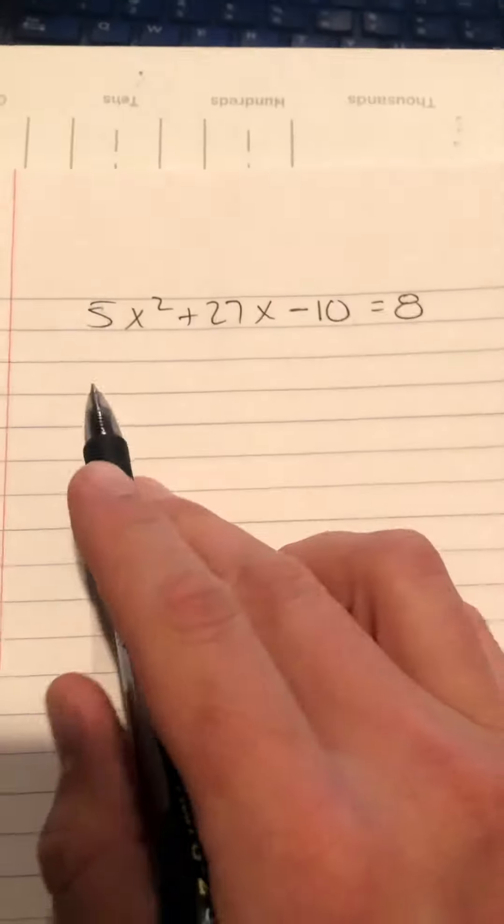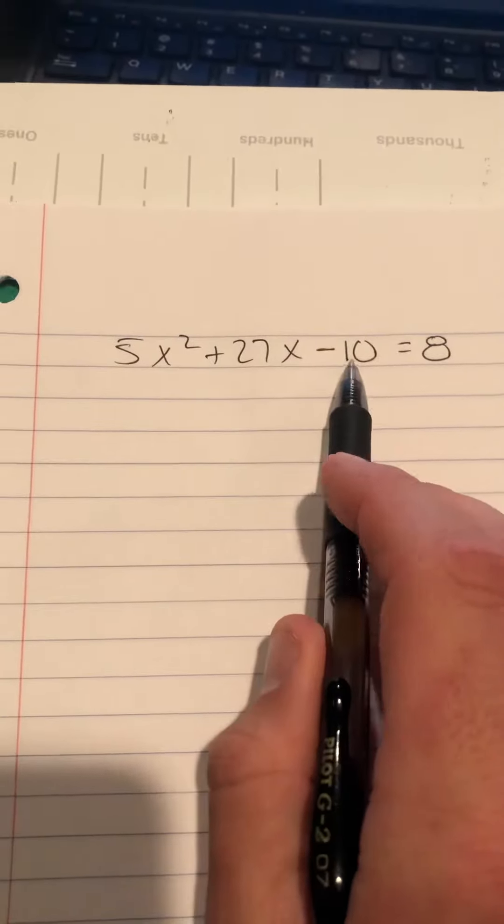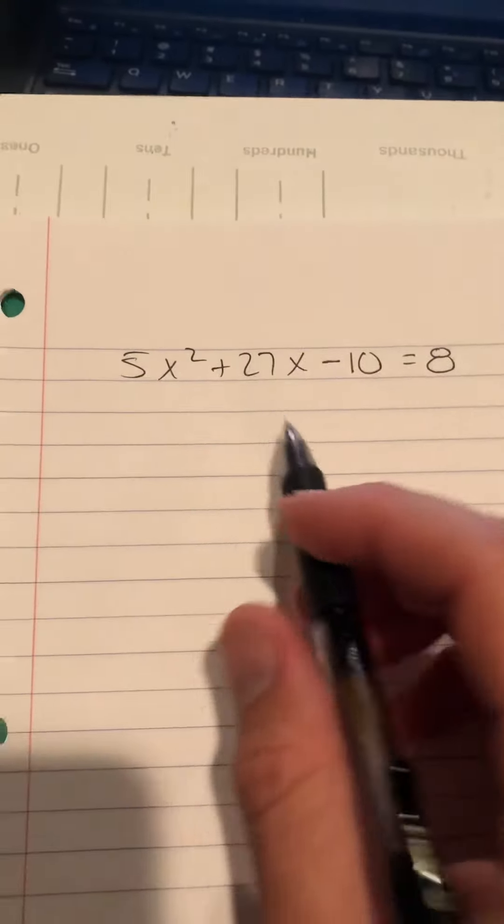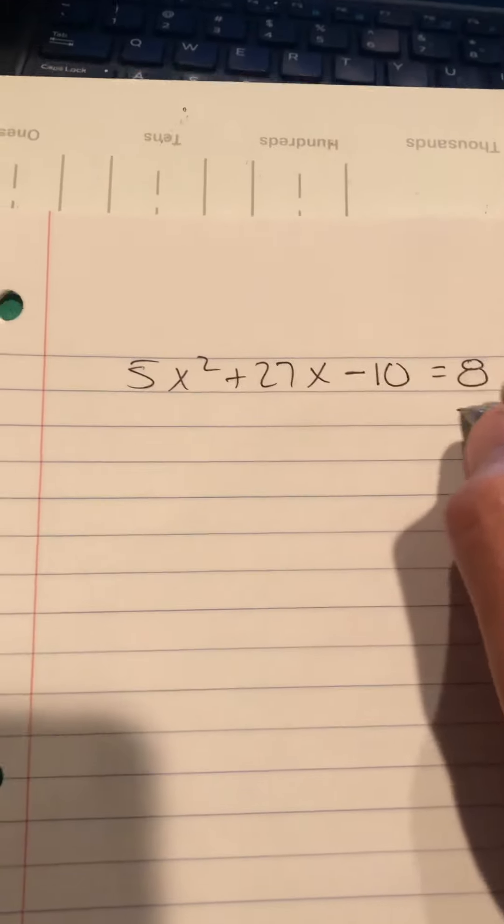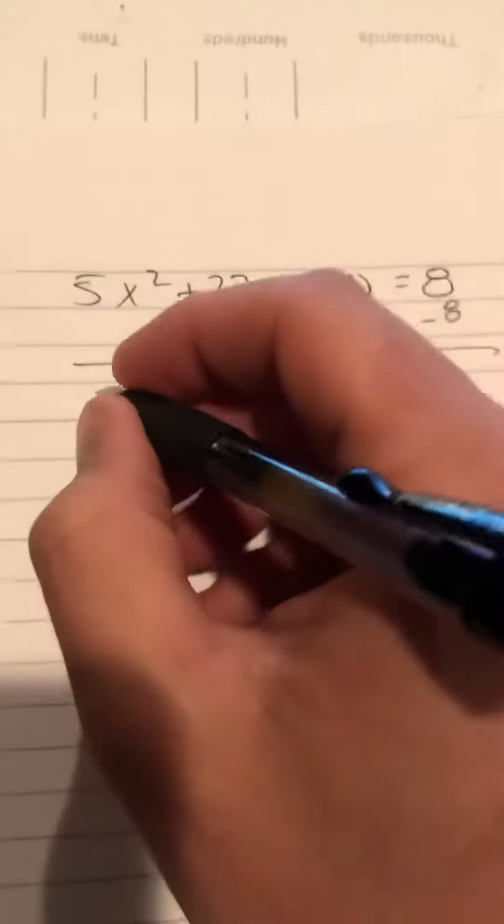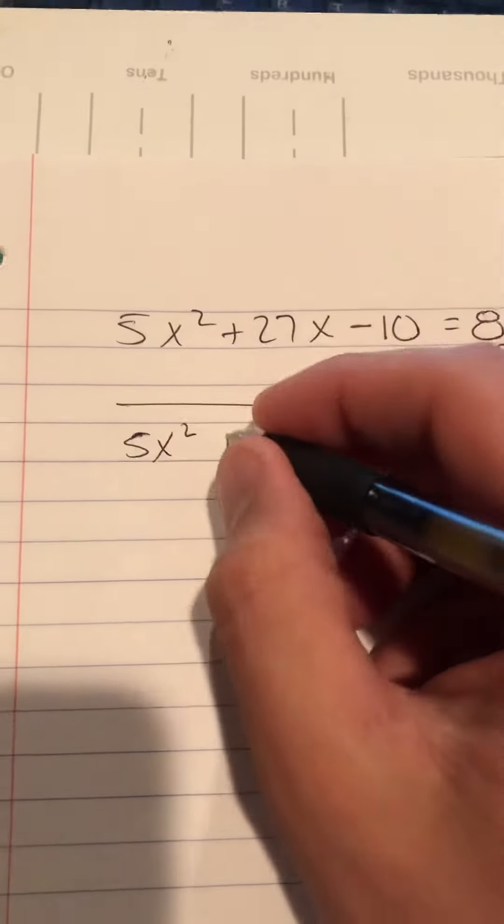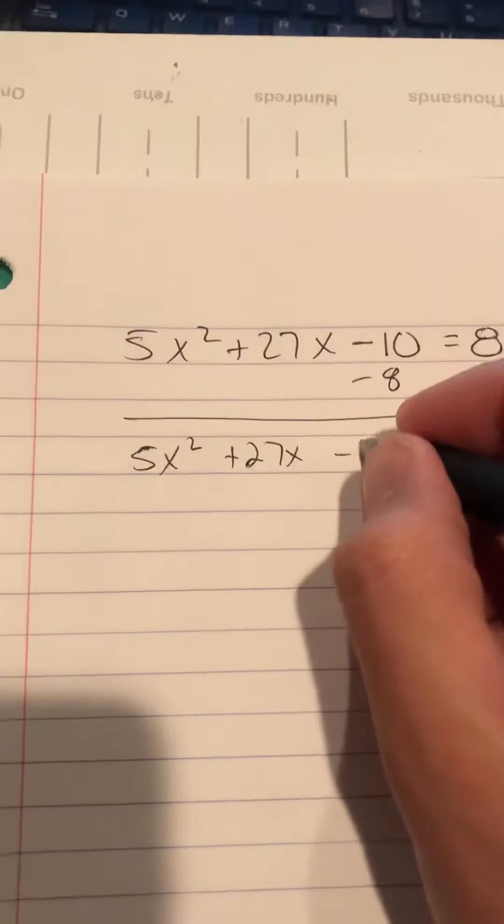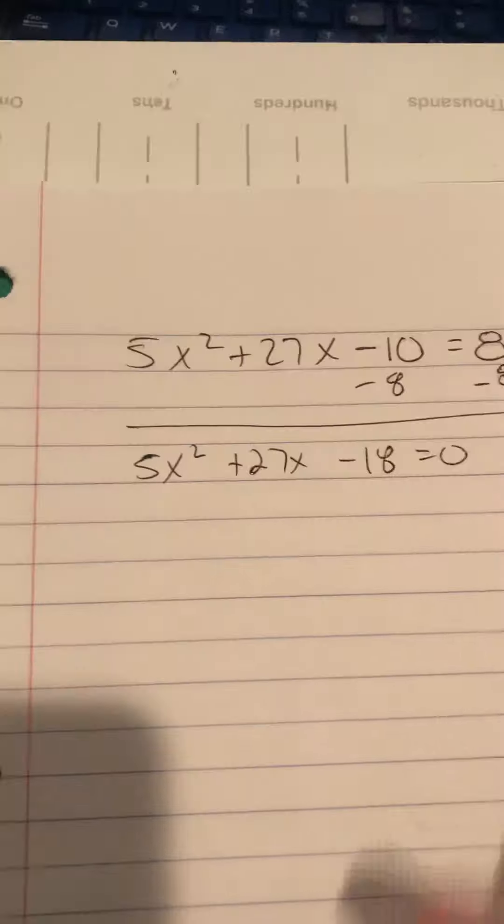Let's take a look at an example down here. Here you can see I have a quadratic formula on the left equaling 8. This is not in standard form, and so what I'll do is I'll subtract 8 from both sides. In doing so, I get 5x squared plus 27x minus 18 equals 0.